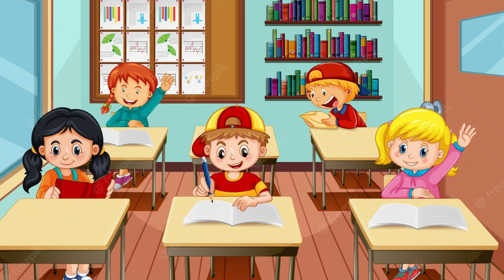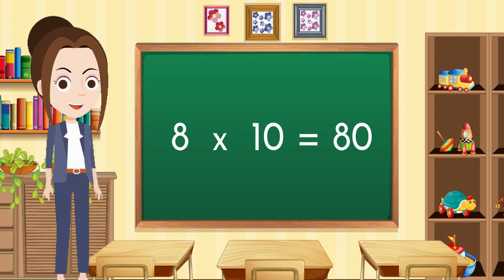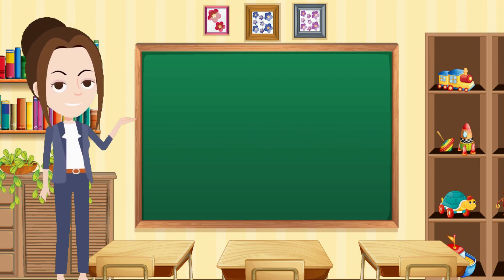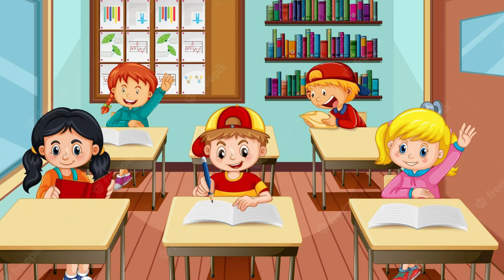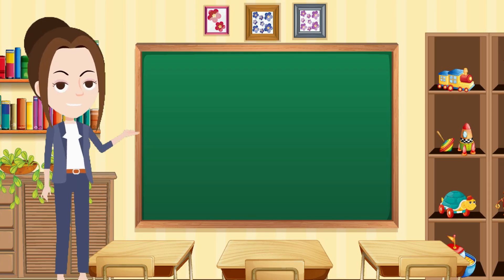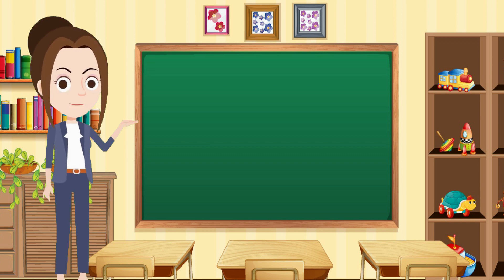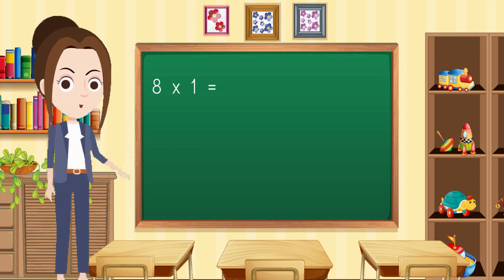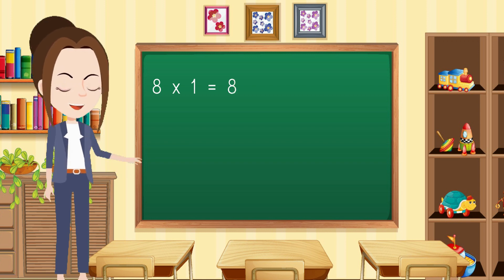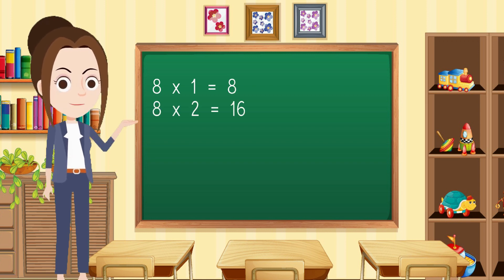Eight nines are seventy-two. Eight tens are eighty. Dear kids, you have read the table of eight with me. Now repeat again: eight ones are eight. Eight twos are sixteen.